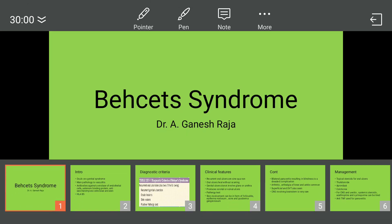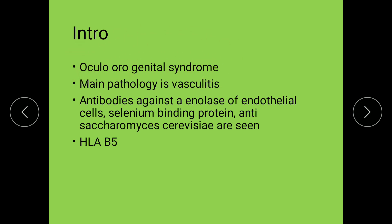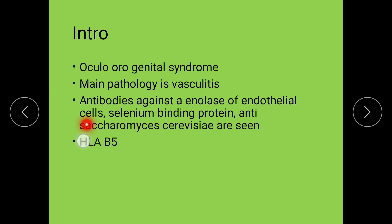Behçet's syndrome indicates an occulo-oral-genital syndrome with involvement of the ocular, oral, as well as genital systems. The main pathology is vasculitis. Three antibodies have been detected, though their role is not clear: antibodies against alpha-enolase of the endothelial cells, selenium binding protein, and anti-Saccharomyces cerevisiae antibodies. It is usually associated with HLA-B5 — remember B and S looks like 5, so remember HLA-B5.